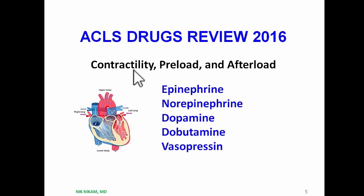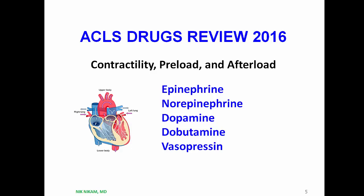Let's look at the first group of drugs that deal with contractility, preload, and afterload. Contractility is basically the pumping function of the heart, which may be compromised in the presence of massive myocardial infarction, severe congestive heart failure, or pulmonary embolism. Preload refers to the venous return and can be compromised in patients with severe bleeding or shock. Afterload can be related to increased systemic vascular resistance, found in patients with severe congestive heart failure.